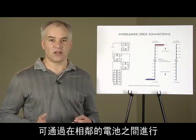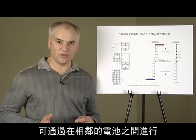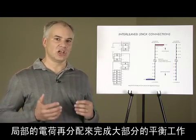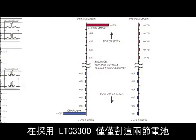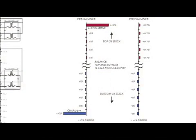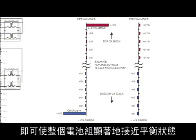With the LTC 3300 topology, most of the balancing work can be done by redistributing charge locally among the neighbor cells. As shown to the right, the entire stack can be brought significantly closer to balance after a single pass addressing just these two cells with the LTC 3300.